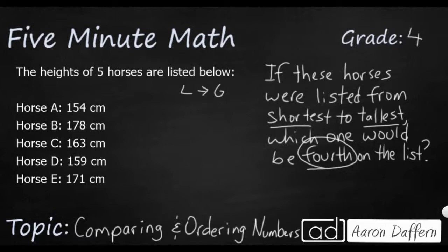They all go to the hundreds place, so let's look at the tens place next. In the tens place we have five, seven, six, five, and seven. The two fives are the ones to look at, and when those are both fives we look at the ones place. Horse A is the very smallest, so I'll write 154 and list the values as a string to show the order.